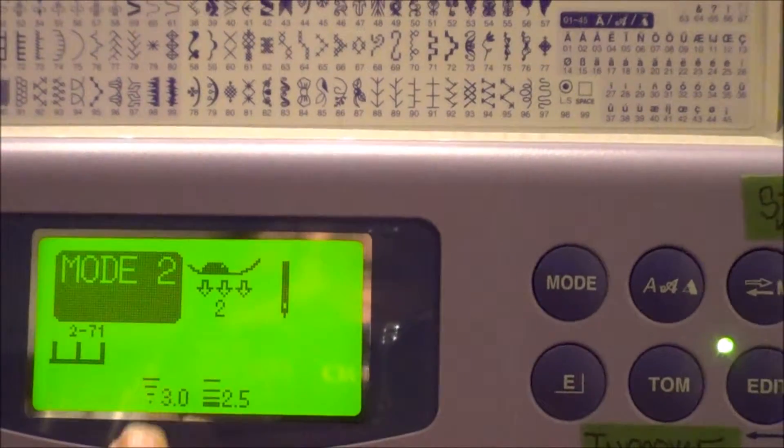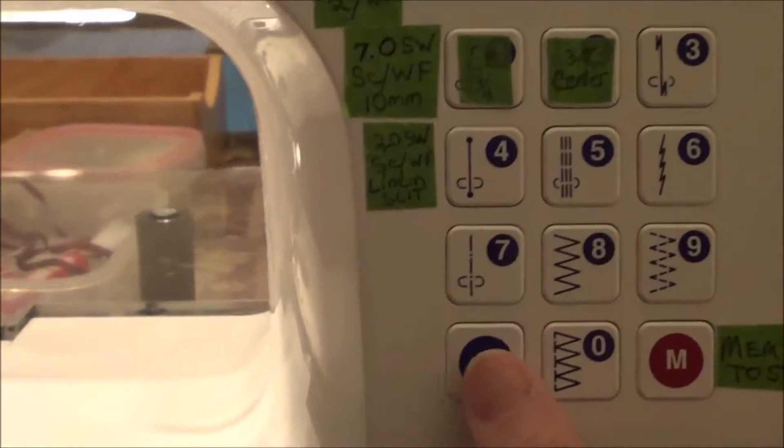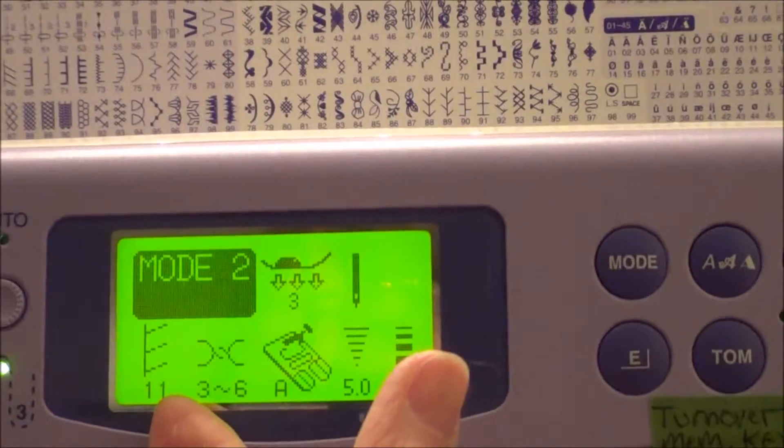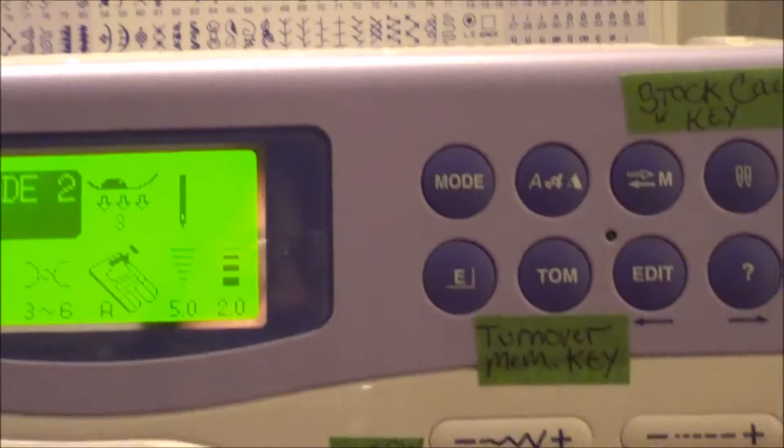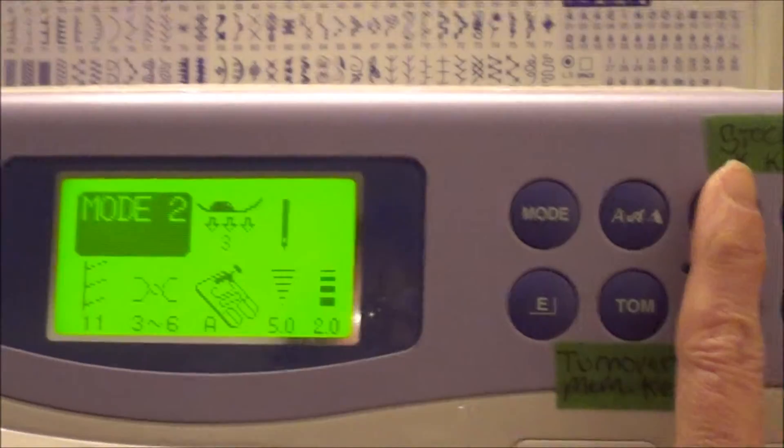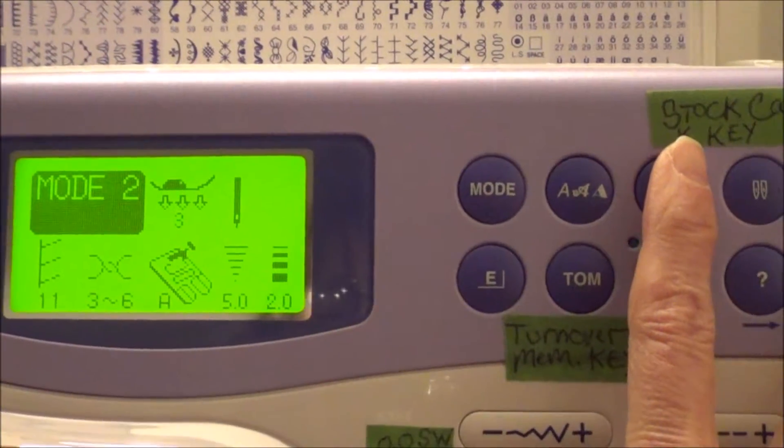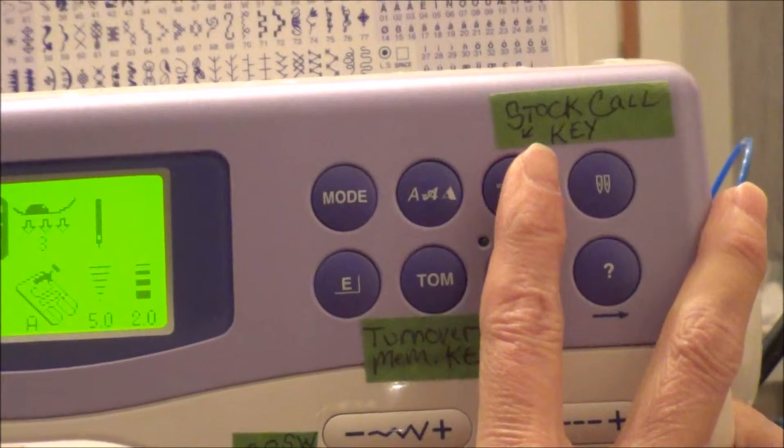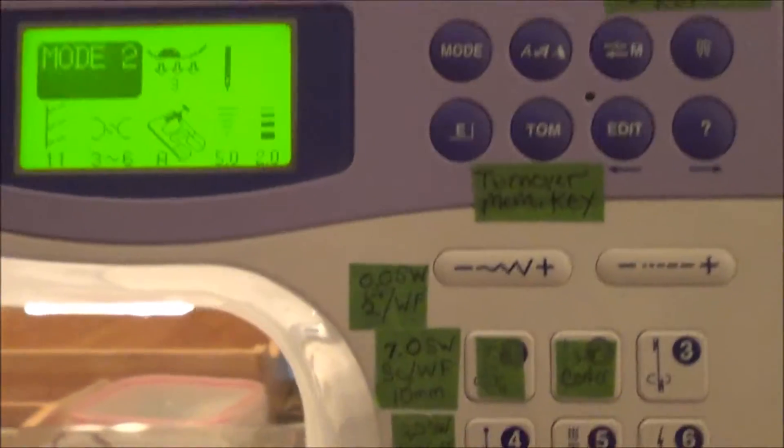So now to get out of this, you just come down here and hit the clear button. It doesn't clear that design. It just takes you back to mode two, the first stitch in mode two. So we got to go back to stock call key. Um, well, wait, wasn't I, wasn't I saving that for you? Yeah, I was, I was saving it for you. So let's go back and save it.